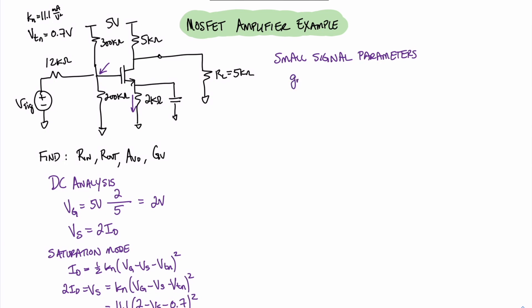We recognize that gm equals KN times Vov. Knowing that, we plug in our known value of KN of 11.1 and our just-found value for the overvoltage of 0.3 volts, and we find that gm equals 3.33 milliamps per volt.